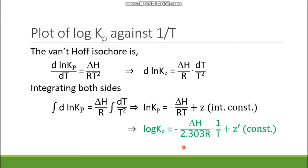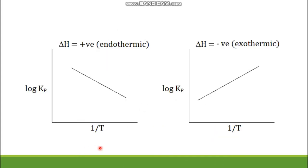If we consider log Kp as the y-variable and 1/T as the x-variable, then plotting log Kp against 1/T gives a straight line where the slope is -ΔH/(2.303R) and the intercept is Z'. This slope may be positive or negative depending on the value of ΔH. If ΔH is positive — the reaction is endothermic — the overall term is negative, so the slope is negative. If ΔH is negative — the reaction is exothermic — the slope is positive.